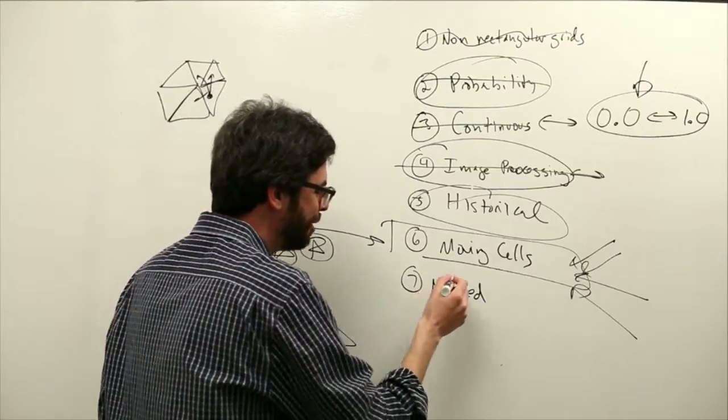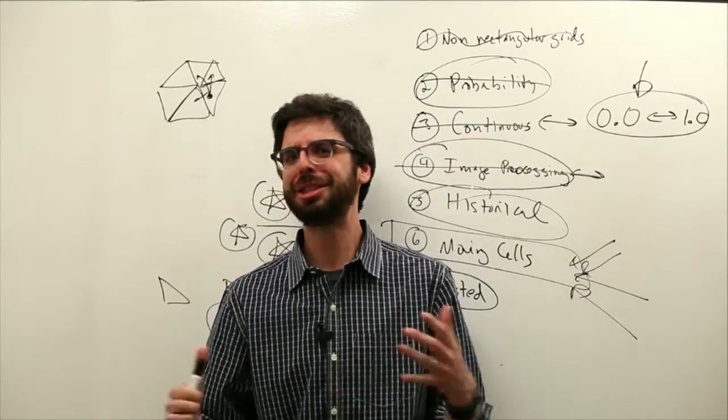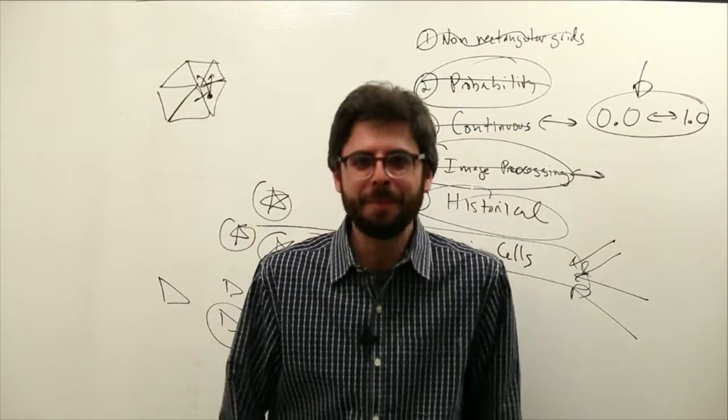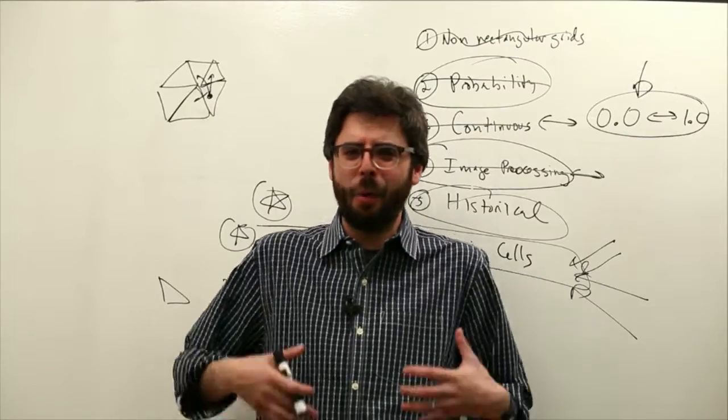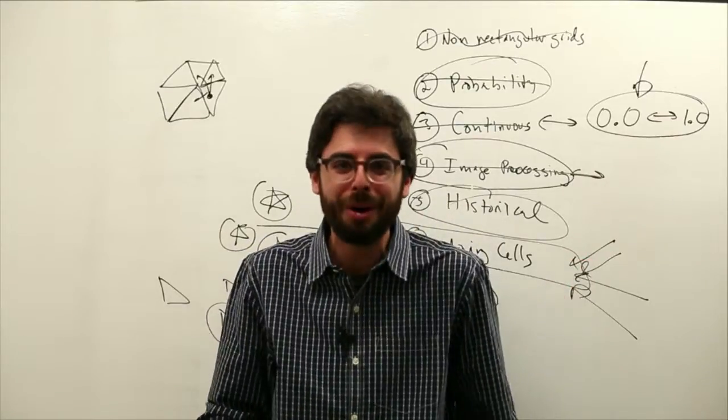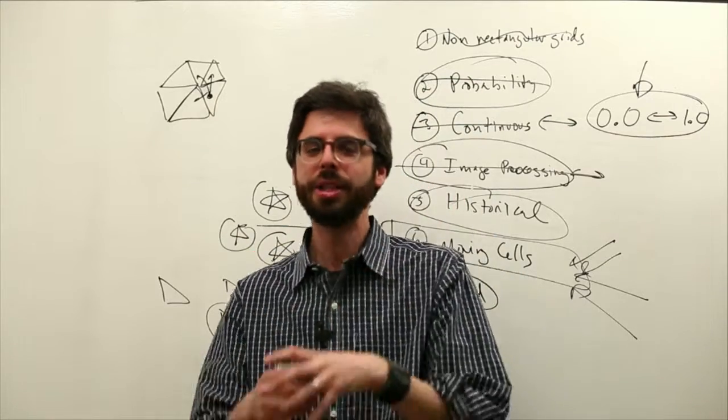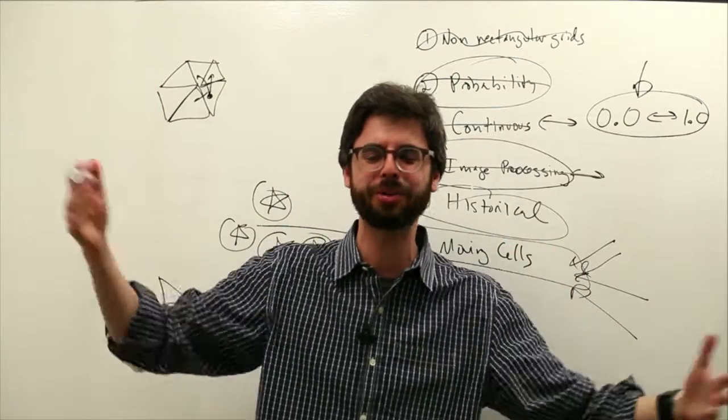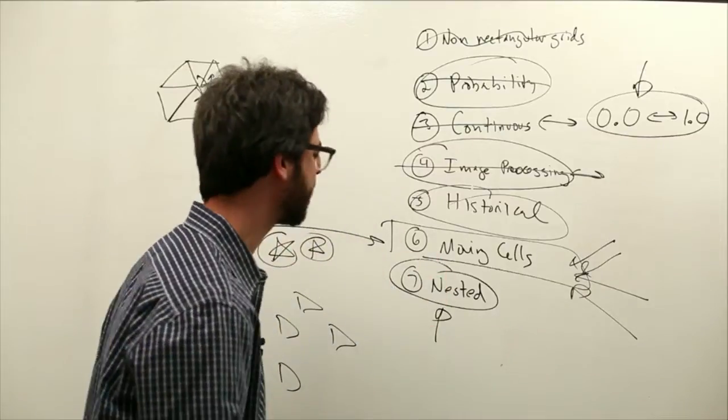And then there's also this idea of nesting complex systems. The world is a nested place - an organ is a system, I am a system of organs, ITP here is a system of people, the city is a system of people, the world is a system of cities, the universe is a system of worlds. This idea of nested complex systems - it was a terrible explanation,